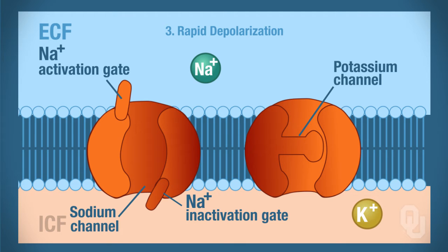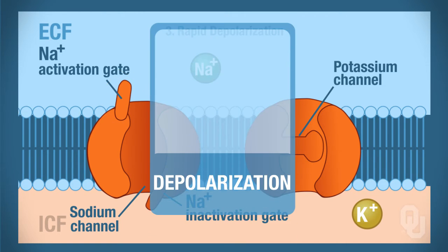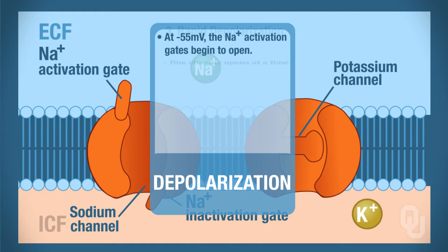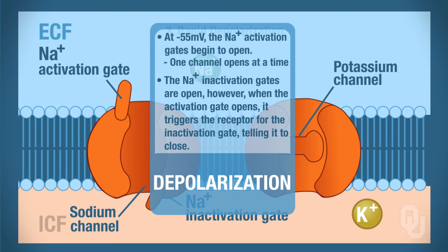Let's look at the voltage-gated sodium activation gate. As you can see in the diagram, the activation gate is now open. At negative 55 millivolts, these voltage-gated sodium activation gates begin to open. They don't all open at once along the length of the axon — they open in a progressive fashion: one channel opens, then the next, and the next, and so on. The voltage-gated inactivation gates are open at this point.